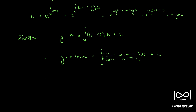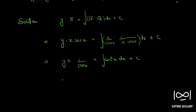After cancellation, we have y·(1/cos(x)) = integral of sec²(x) dx + c. The integral of sec²(x) is tan(x), so we get y·(1/cos(x)) = tan(x) + c, which can be written as x·y·sec(x) = tan(x) + c.